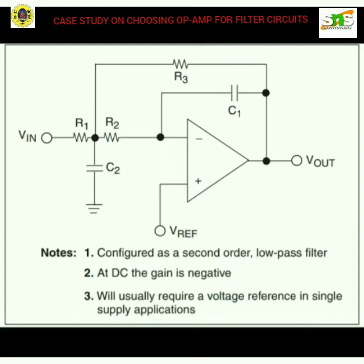In this circuit, you can see the non-inverting Sallen-Key configuration, which is designed so that the input signal is not inverted. The gain option is implemented with R3 and R4. The circuit includes resistances R1, R2, R3, R4, capacitances C1, C2, input voltage Vi, output voltage Vo, and also a reference voltage.